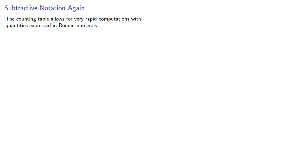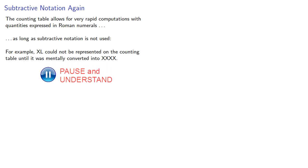So it's important to note that the counting table allows for very rapid computations with quantities expressed in Roman numerals as long as subtractive notation is not used. For example, XL, 40, could not be represented on the counting table until it was mentally converted into XXXX. Consequently, subtractive notation remained rare as long as the counting table was used.